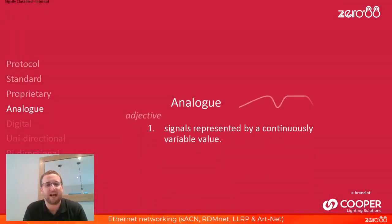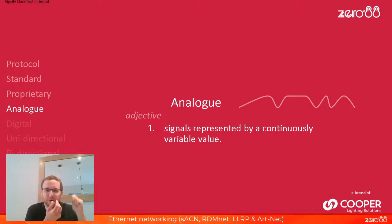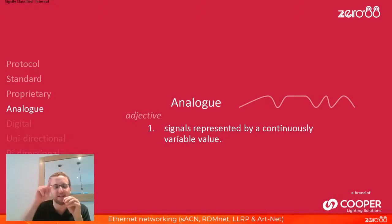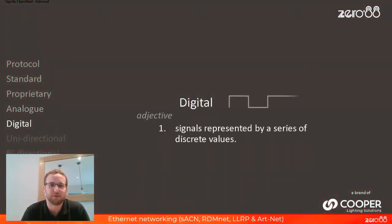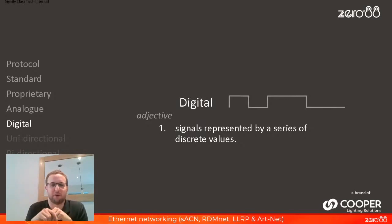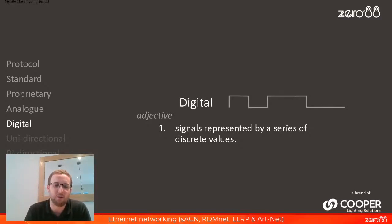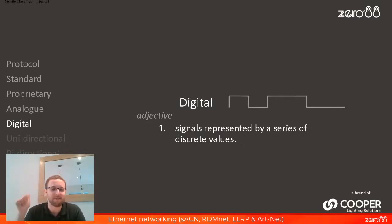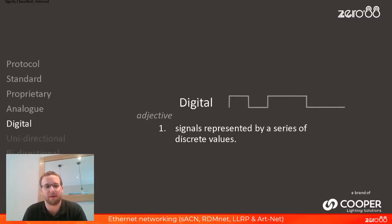We're talking about digital signals, not analogue. An analogue signal would be continuously changing as it passes data. A digital signal, if you could cut the cable open and listen, would be a series of on's and off's, highs and lows, ones and zeros. We get a much cleaner signal at the end of the chain. Streaming ACN, RDMnet, Art-Net — all Ethernet-based protocols — are digital, as are DMX and RDM.